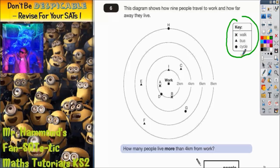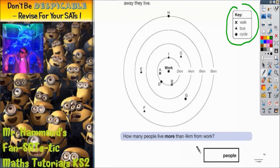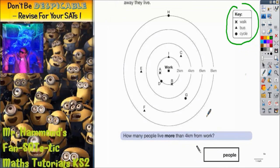Now, the first question says, how many people live more than 4 kilometers from work? Well, if we look at the diagram, this circle is on 2 kilometers, this circle is on 4 kilometers, and that is actually the one that we're interested in.